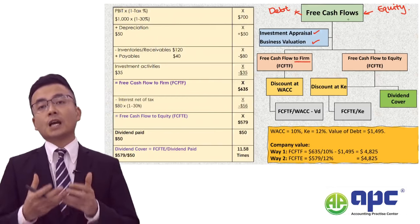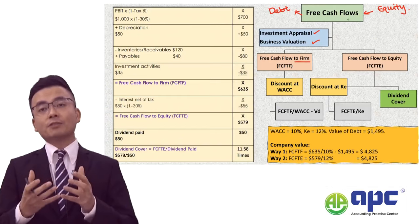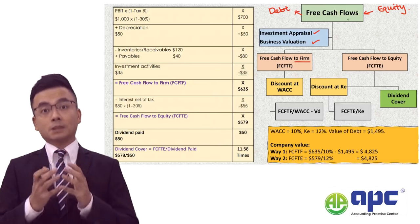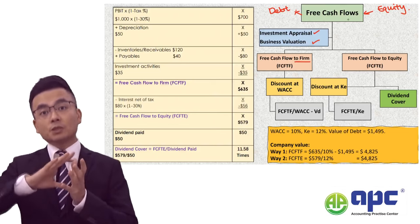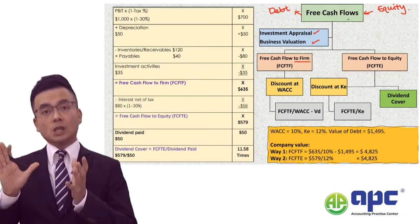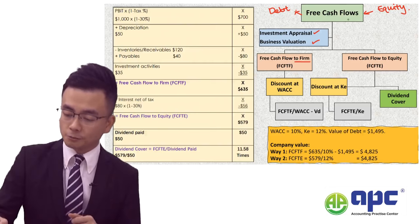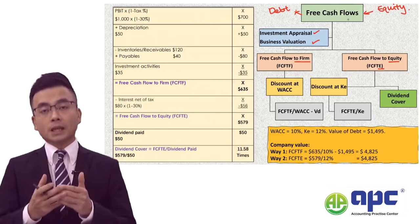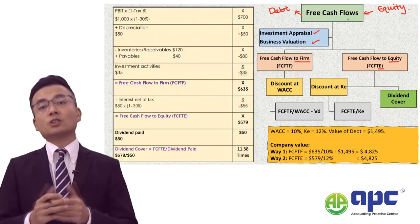If we work out how much money is left that can be distributed to both debt and equity holders, this is the free cash flows to firm. Alternatively, after subtracting any interest and principal to the debt holders, the money left within the business is the free cash flows to equity — the money that can be distributed solely to the shareholders.